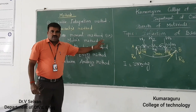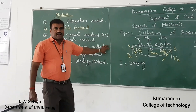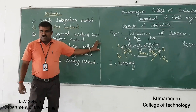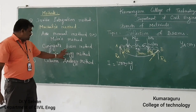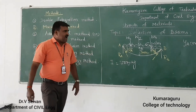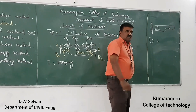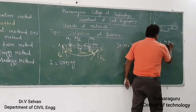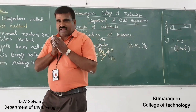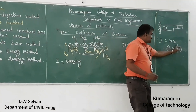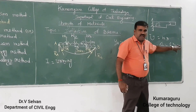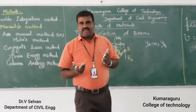The fourth method is called the conjugate beam method, used for very complicated loading on beams. Additionally, the last two methods are the strain energy method and the column analogy method. Using strain energy, you know it is nothing but half of W into delta. If you equate strain energy stored equal to work done, you can find the deflection — that is, delta or Y-max.